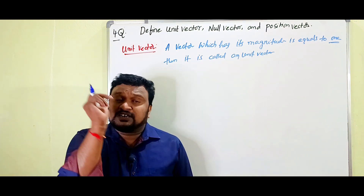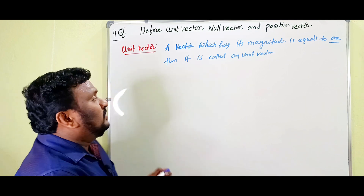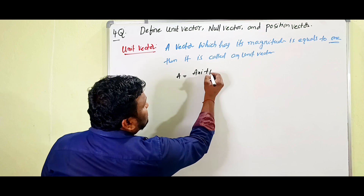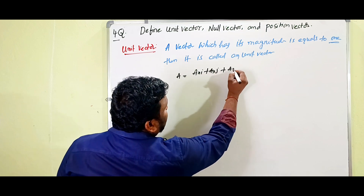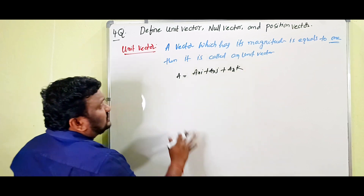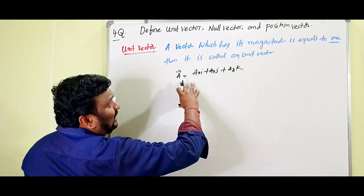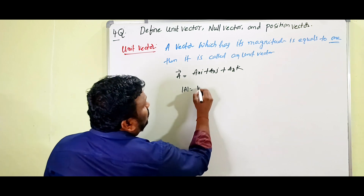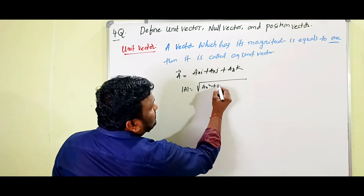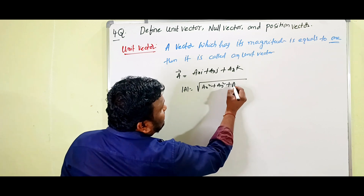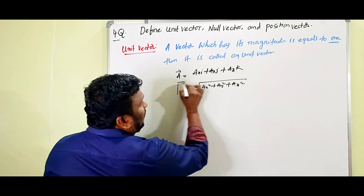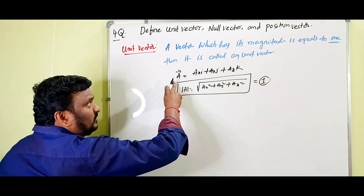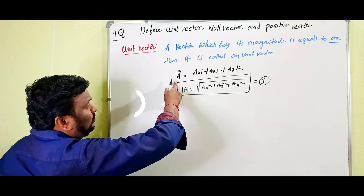For example, if we have vector A equal to Ax·i + Ay·j + Az·k, this is vector A. Its magnitude is mod of A, which equals the square root of Ax² + Ay² + Az². If this value equals one, then this vector A is called a unit vector.